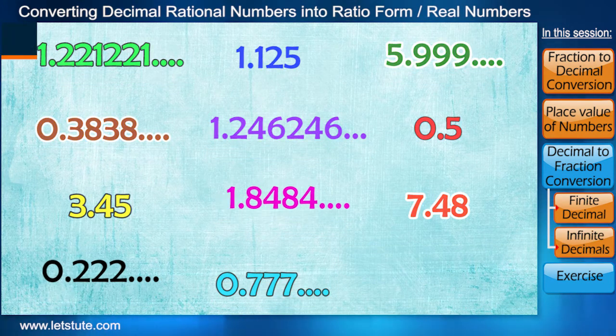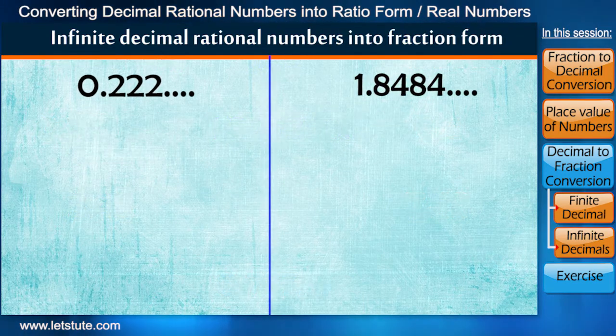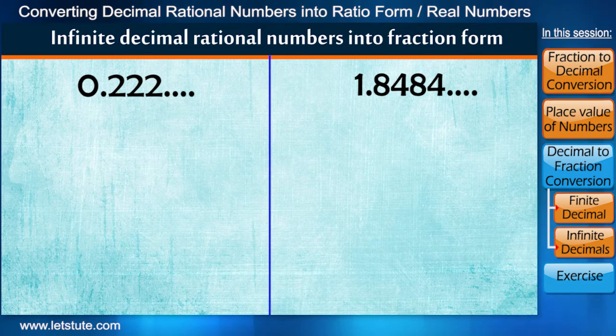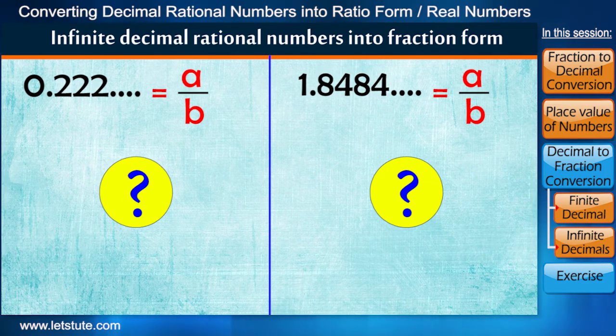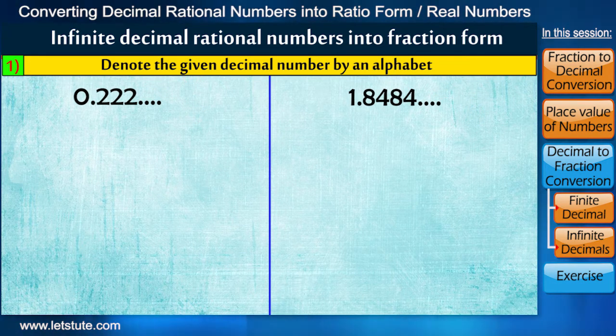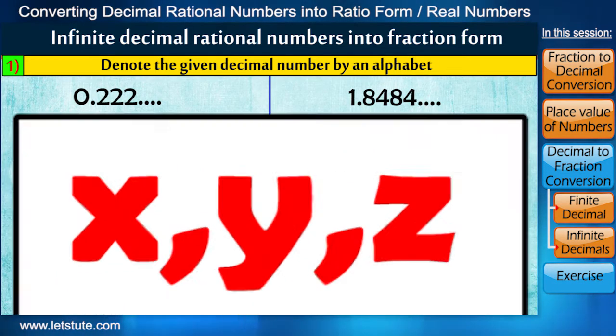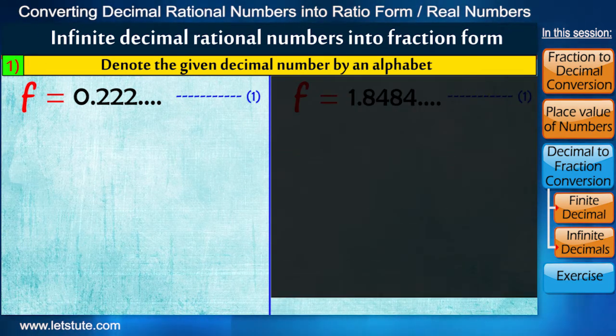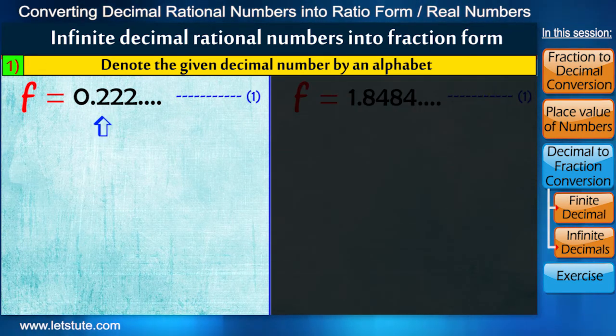Let's learn that by taking these numbers first. We know that these infinite decimal numbers are equivalent to some fraction which we don't know yet. So first we denote it by any unknown alphabet x, y, z, etc. I am taking alphabet F for fraction. In the next step, we look at the number of digits that repeat.